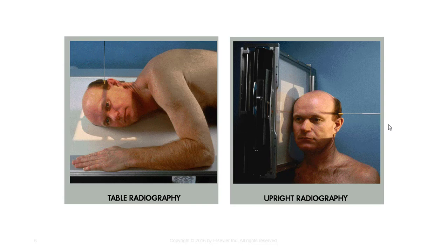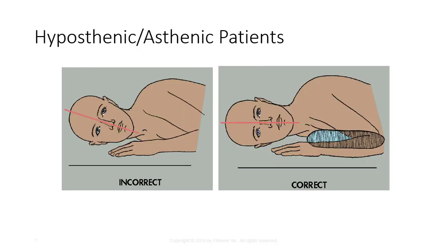Some exams like sinus x-rays require demonstration of air-fluid levels and should be performed upright with a horizontal beam. General body position is especially important in hyposthenic, asthenic, and hyperasthenic body types.